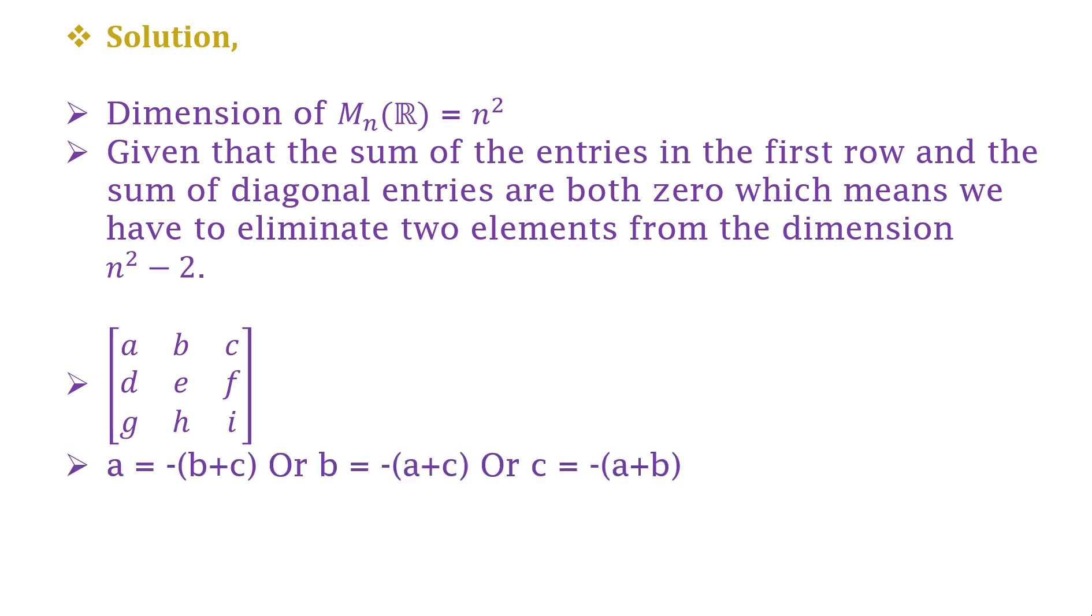But as per our question it is possible in the first row that a equals -(b+c), b equals -(a+c), or c equals -(a+b), as the sum of the entries in the first row is zero.